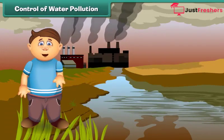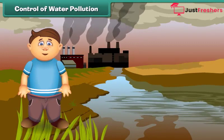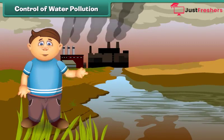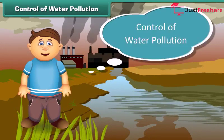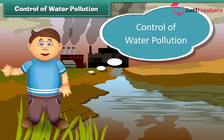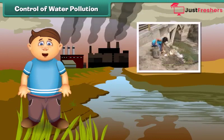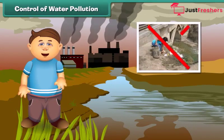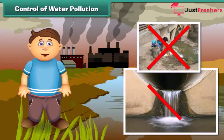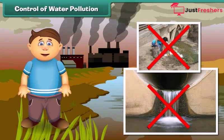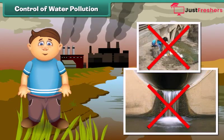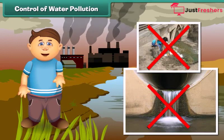Can we control water pollution? The answer is yes. To control water pollution, we should not dispose of garbage and harmful chemicals directly into ponds, lakes, and rivers.